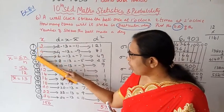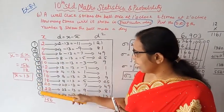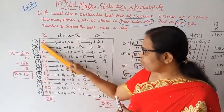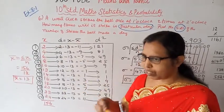One, two, three, four, five, six, seven, eight, nine, ten, eleven, twelve. So 12 numbers are required.